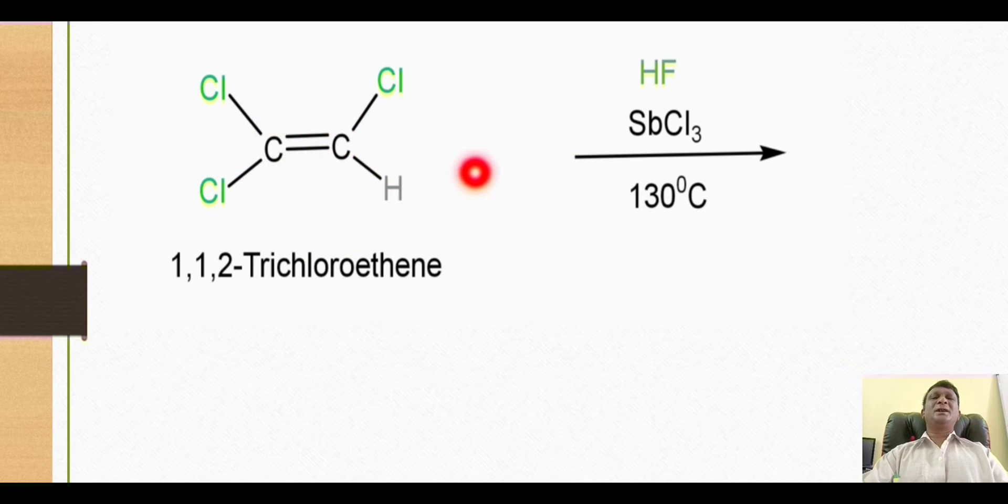The electrophilic addition takes place in such a way that the positive part of hydrofluoric acid (H+) goes to the carbon which is less substituted, while the negative part goes to the carbon which is highly substituted. So fluorine gets attached on this carbon while hydrogen gets attached on this carbon.